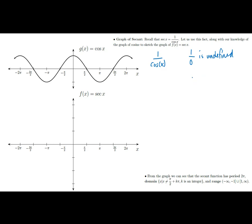One other thing to think about is suppose that I'm not exactly at 0, but close to it — so I'm taking 1 divided by a really small number. For example, 1 divided by 0.0001 we can easily compute is a really big number: it's 10,000. So 1 divided by a really small number is really big.